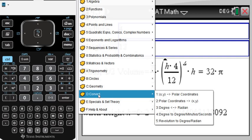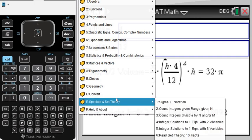Of course, we have conversions rectangular to polar, degree to radian, degree to degree minutes and seconds. And last but not least, we have some specials pertaining sigma notation, counting the number of integers given a range, or counting the integers that are divisible by one or two numbers, etc., and some set theory facts.